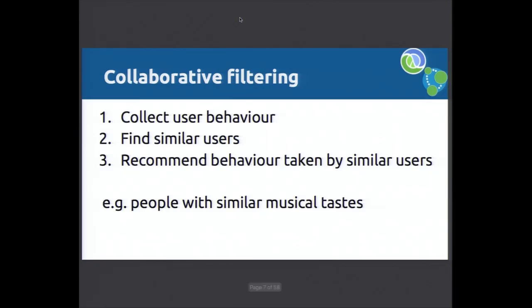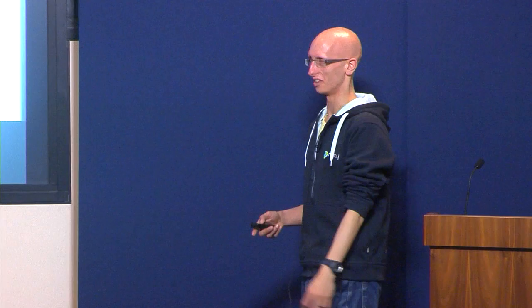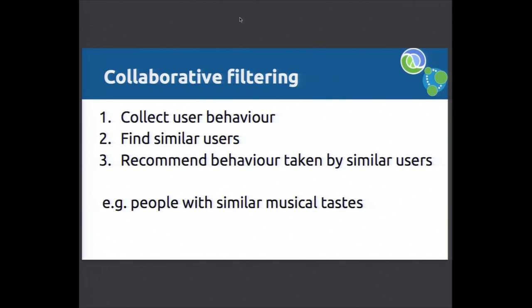Collaborative filtering is a different take on recommendations. Here we say, well, you've done a load of things, and there are other users who have behaved in a similar way to you. They also did some other things — for example, you bought this product, and some other users bought other products as well as buying that product, so let's suggest those to you. For us, this would be finding people who have similar meetup tastes.